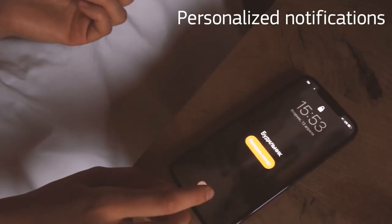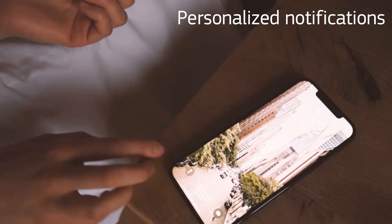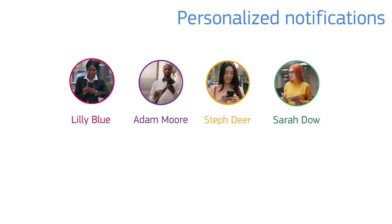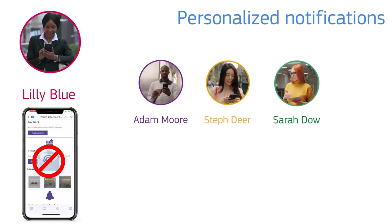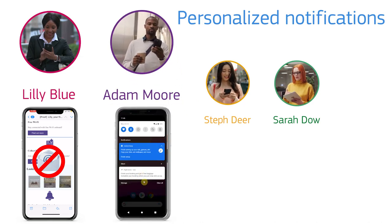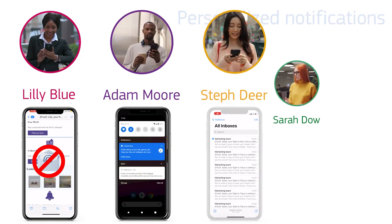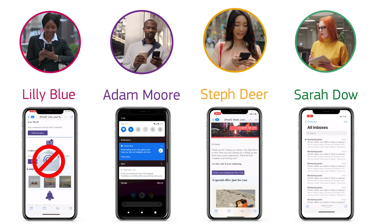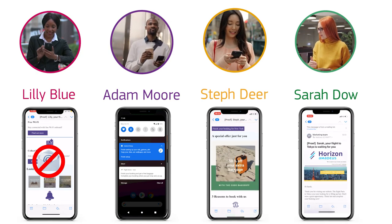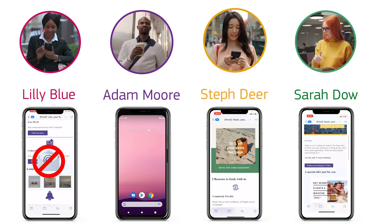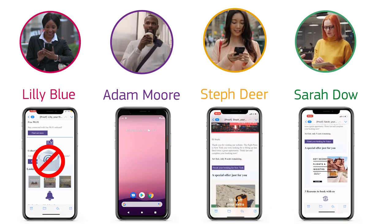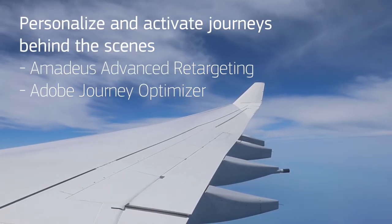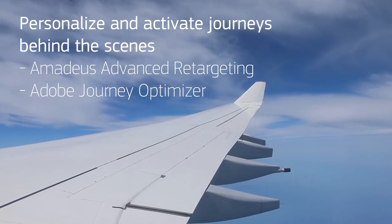Now let's advance the Traveller Journey with personalized notifications based on their real-time profile and preferences. With Adobe Journey Optimizer, each persona receives a preferred notification. No marketing email for Lily Blue to avoid spamming. A push notification with free baggage for Adam. Steph receives an email with a special offer for a seat upgrade. And Sarah, now home from the cafe meeting, receives an email about limited seats remaining on her planned flight to Tokyo, and a suggestion to join the Horizon loyalty program to start enjoying more Traveller benefits. We use Amadeus Advanced Retargeting and Adobe Journey Optimizer to personalize and activate these journeys.